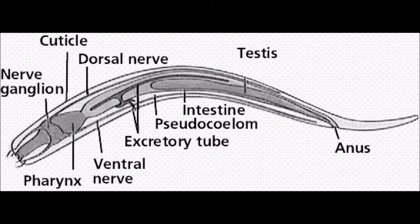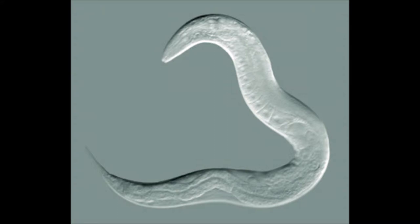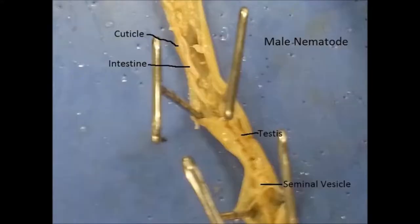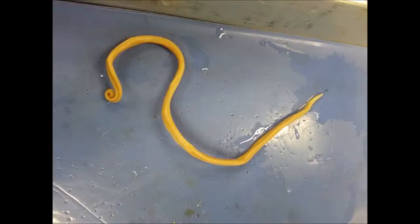Nematodes' bodies are covered by a strong, flexible, non-cellular layer called a cuticle. The cuticle allows nematodes to move and protects them from the environment. Beneath the cuticle is a hypodermis, which is like our skin, just a second layer that lays just below the surface. Then there's a layer of longitudinal muscles, which run the length of the body, that allow these organisms to thrash and move around.